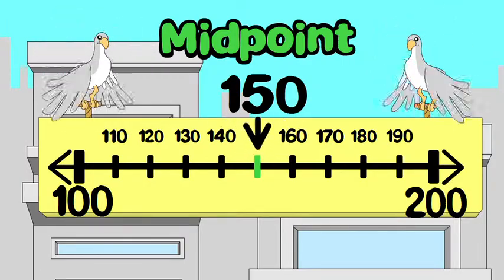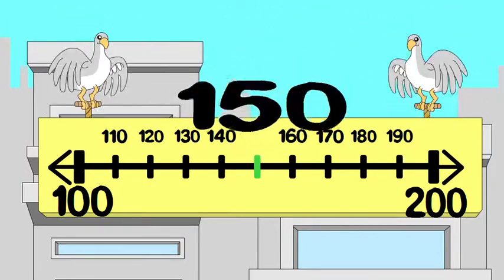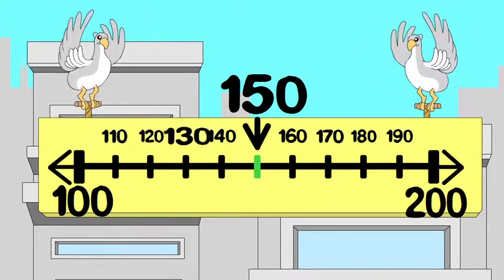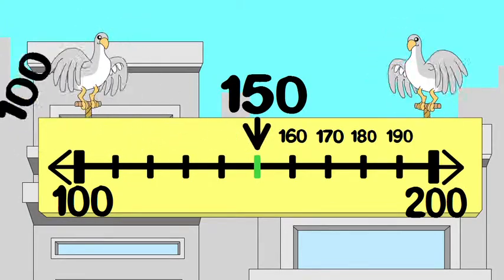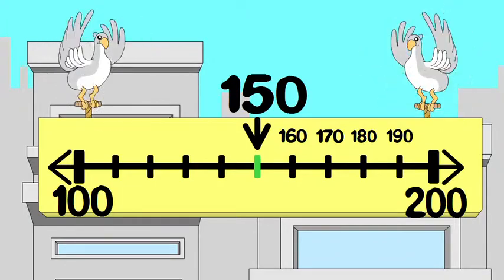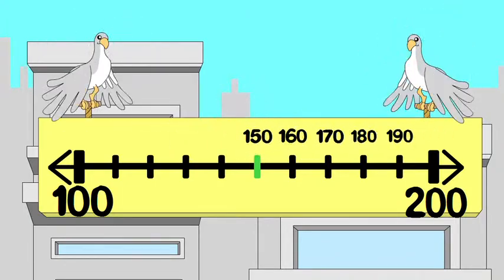If the number you want to round is less than the midpoint, round down. If the number you are rounding is at the midpoint or greater than the midpoint, round up.